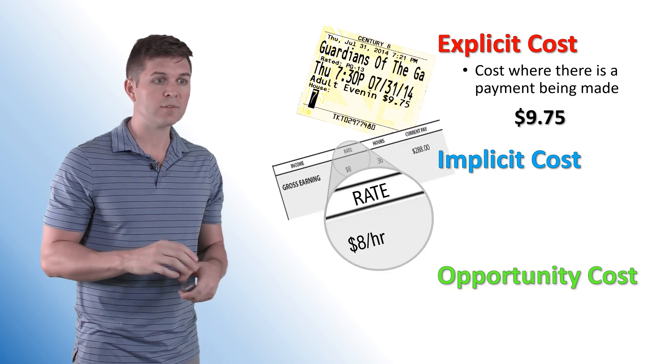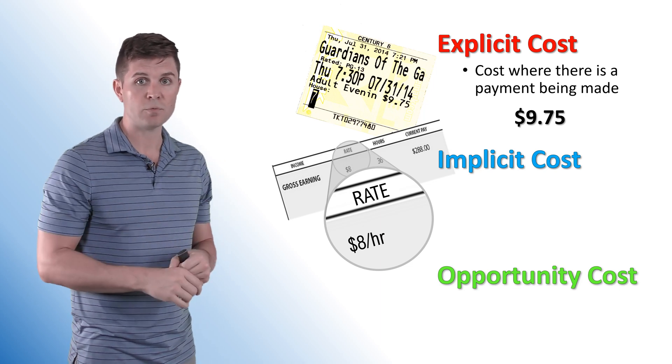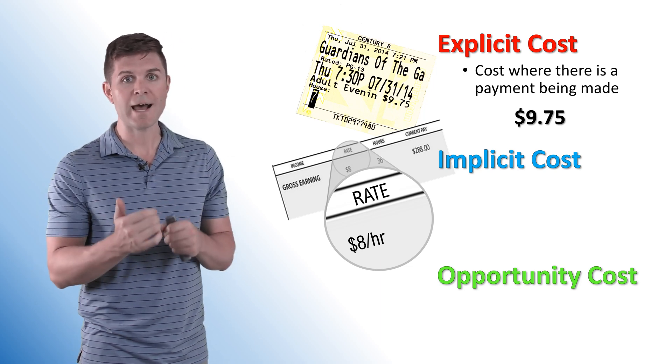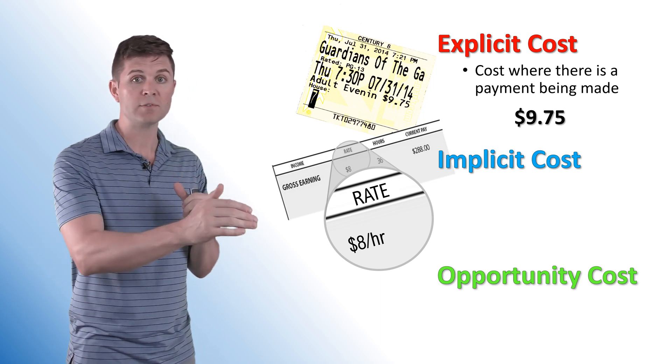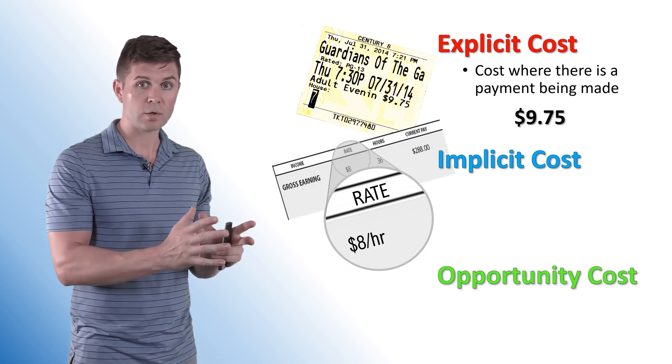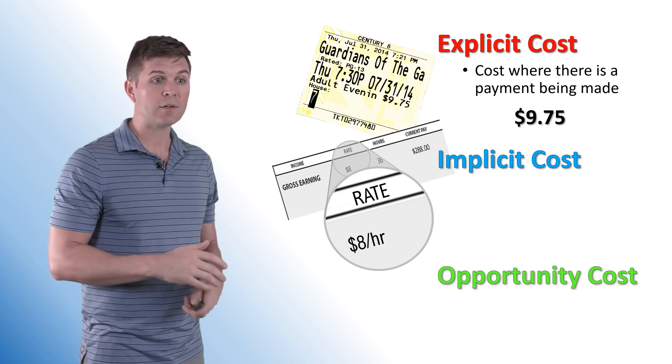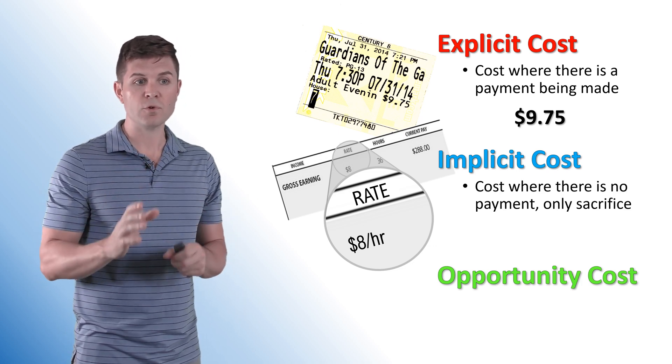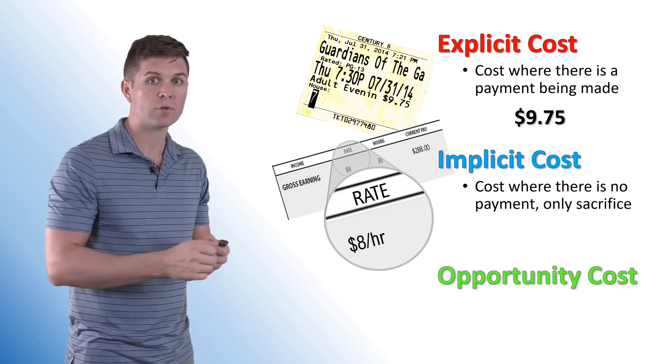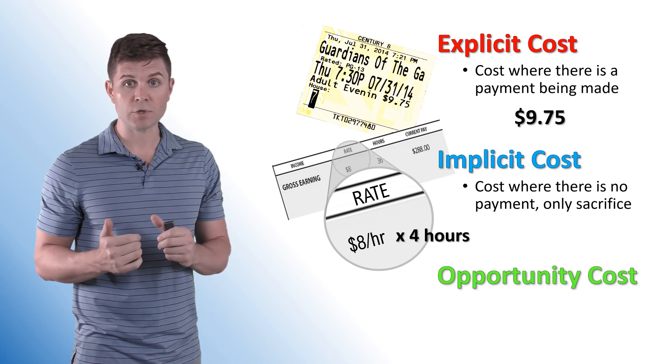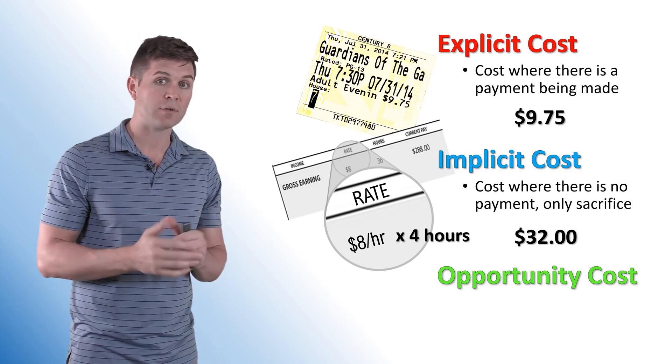Now, the implicit cost is a little different. It's still something that we pay. Let's say that I've got to give up four hours of my time to go see this movie. I could have worked a four-hour shift, but instead I decided to go to this movie. Now, I'm giving something up. I've decided to go to the movies instead of going to work. In this case, I make $8 an hour in this hypothetical situation. But in those $8 an hour, it's the cost where there is no payment and the only sacrifice. So I'm not paying out of pocket. I'm not going to my employer and saying, here's $32. But I did lose $32. I could have worked those four hours. Eight times the four, $32 is my implicit cost in this situation.